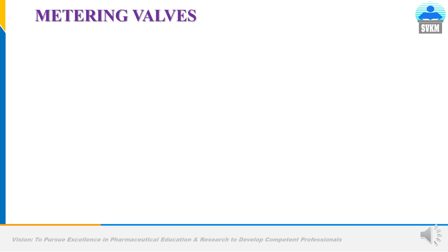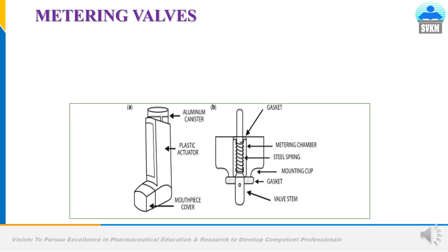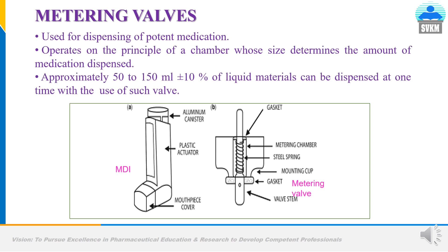The second type of valves are metering valves. Metering valves are generally used for dispensing of potent medicaments. They operate on the principle of a chamber whose size determines the amount of medicament dispensed at one actuation. Approximately 50 to 150 ml, plus or minus 10%, of liquid material can be dispensed at one time with the use of such valves.